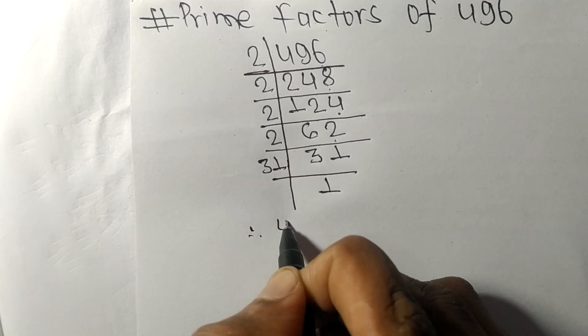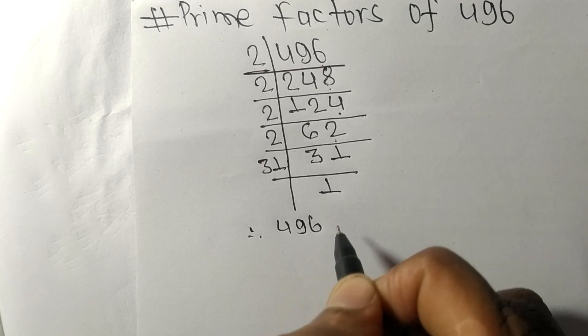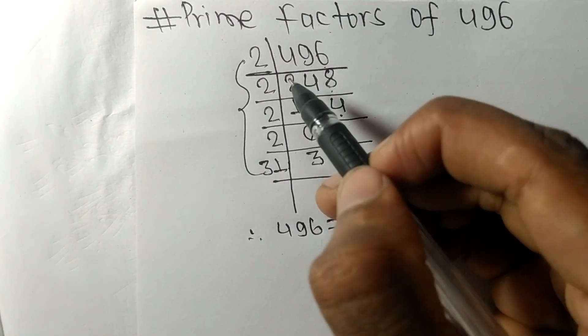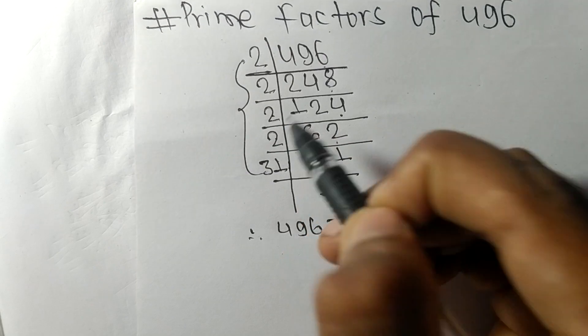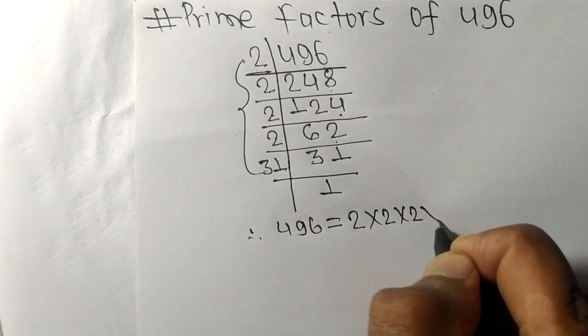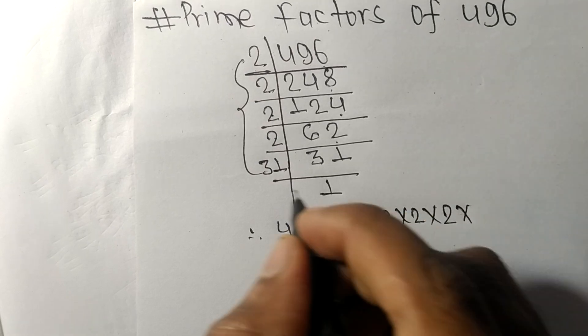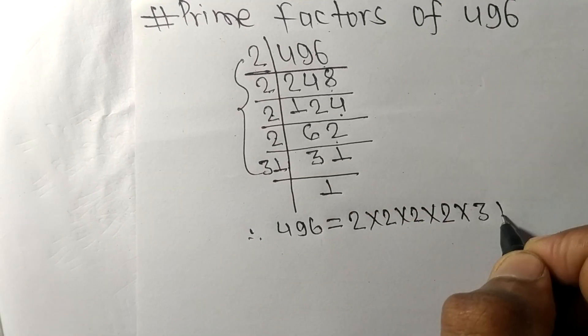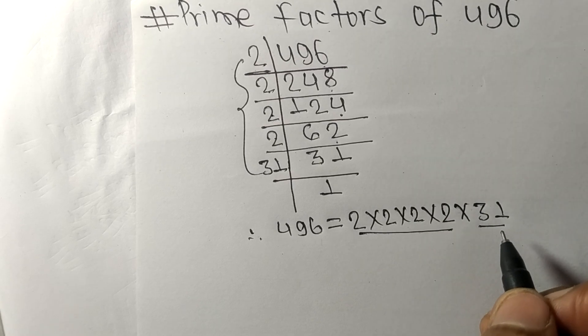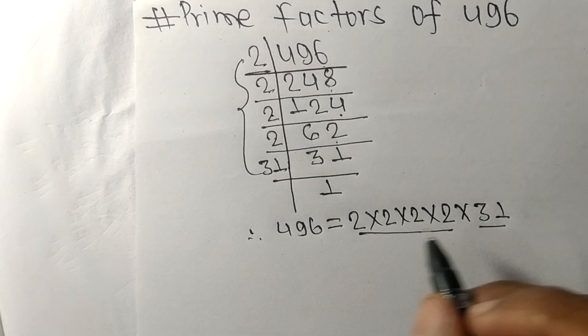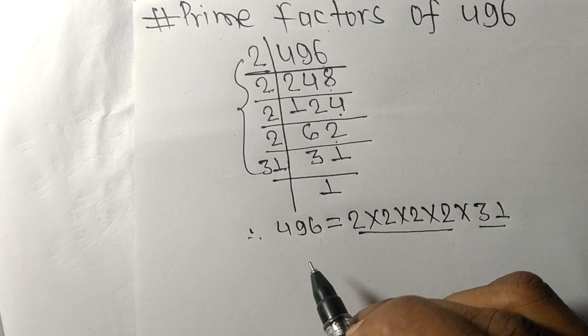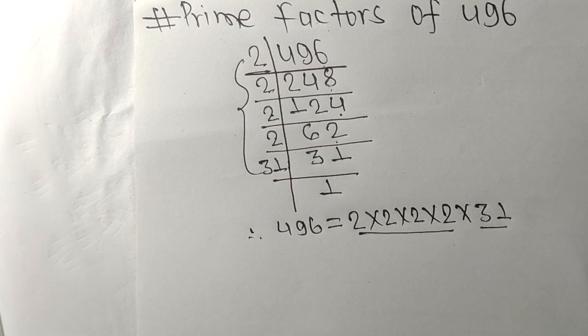Therefore 496 is equal to, from this side we have 1, 2, 3, 4 times 2, so one two three four times 2, and at last 31. So 2 and 31 are the prime factors of 496. That's all for today, and thanks for watching.